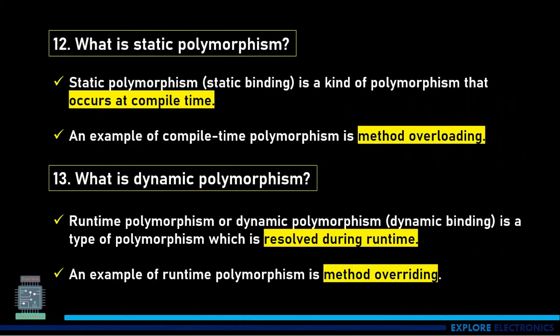What is static polymorphism and what is dynamic polymorphism? Static polymorphism is a kind of polymorphism that occurs at compile time. An example of compile-time polymorphism is method overloading. Dynamic polymorphism is a type of polymorphism which is resolved during runtime. An example of runtime polymorphism is method overriding.